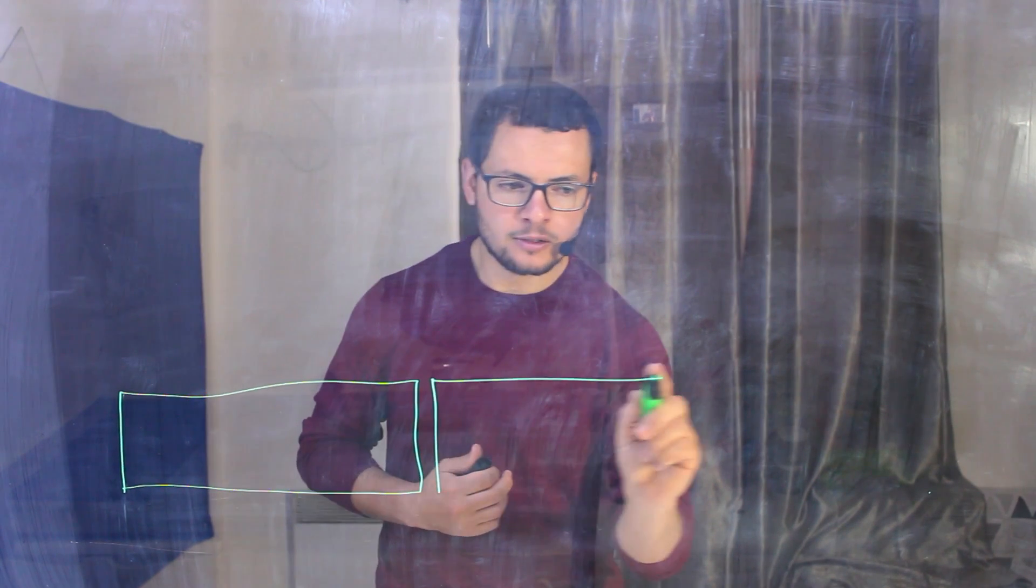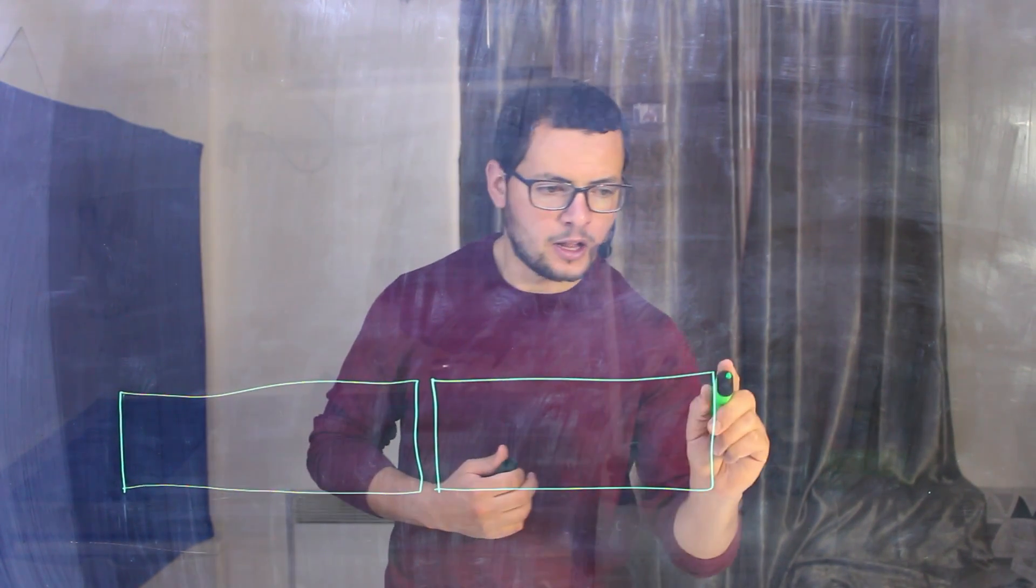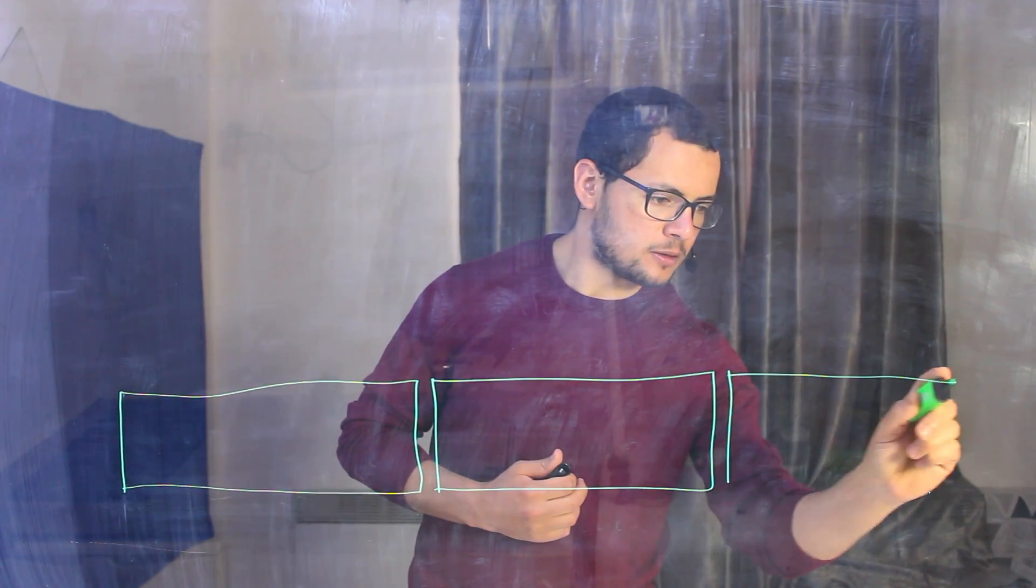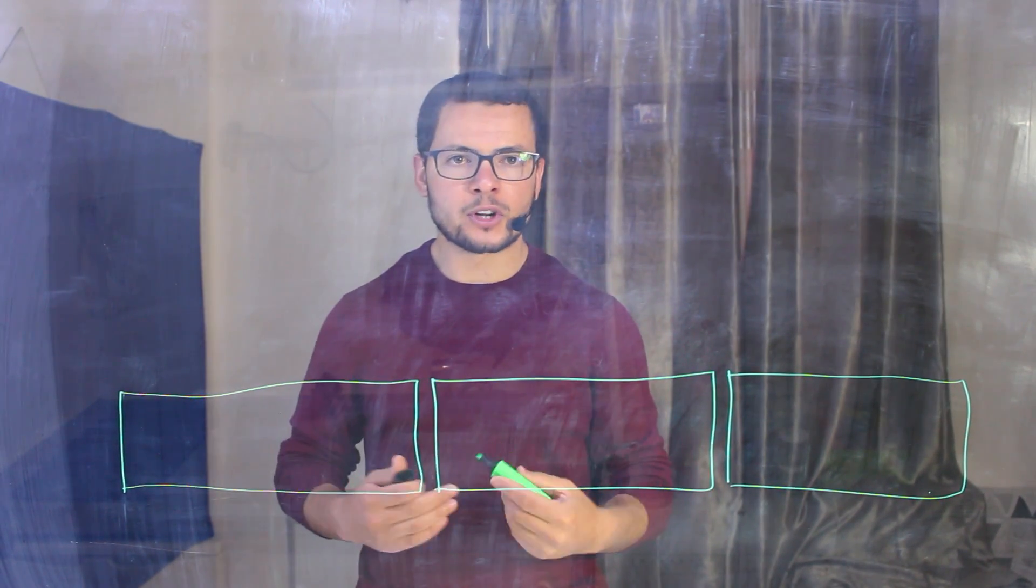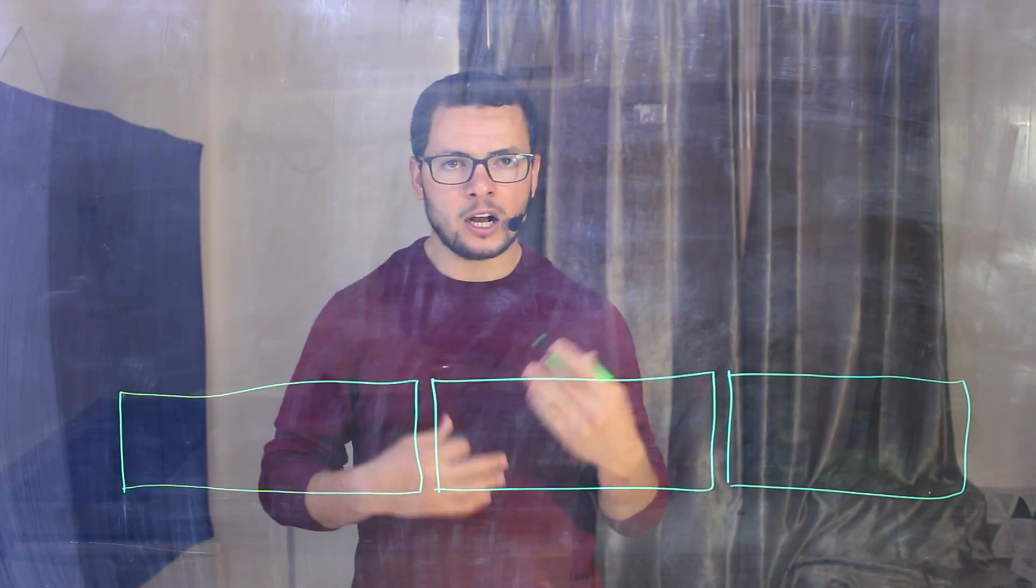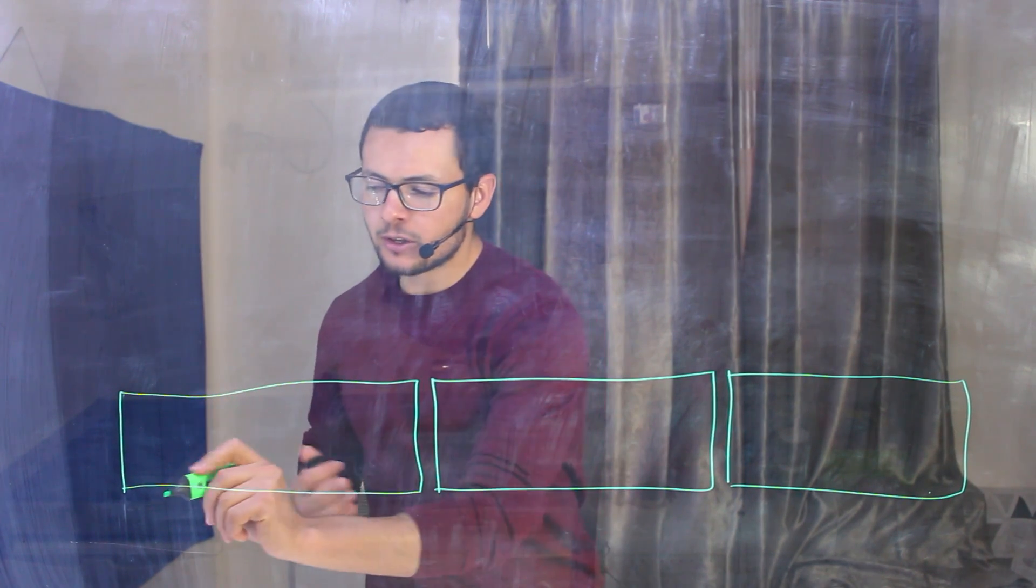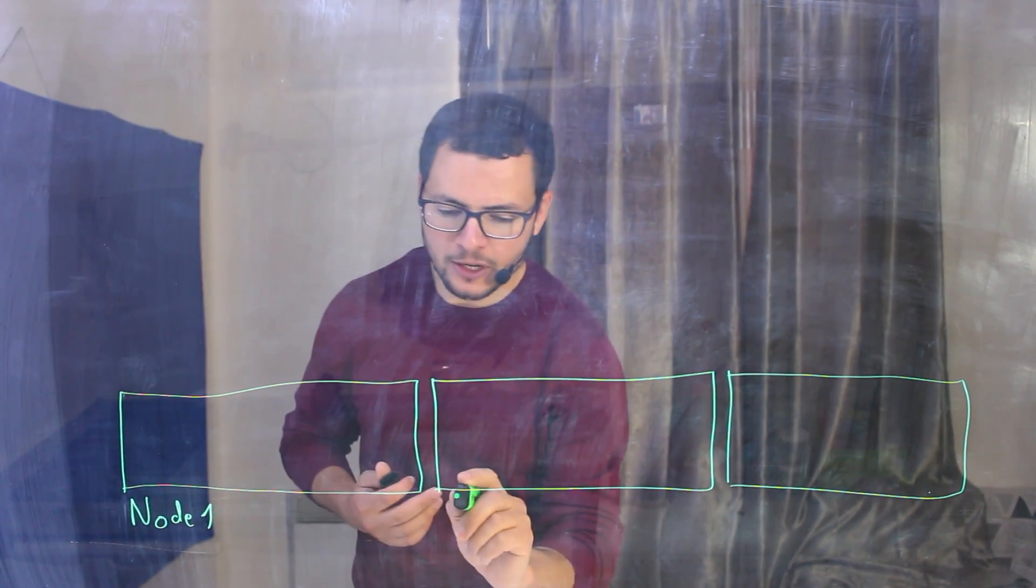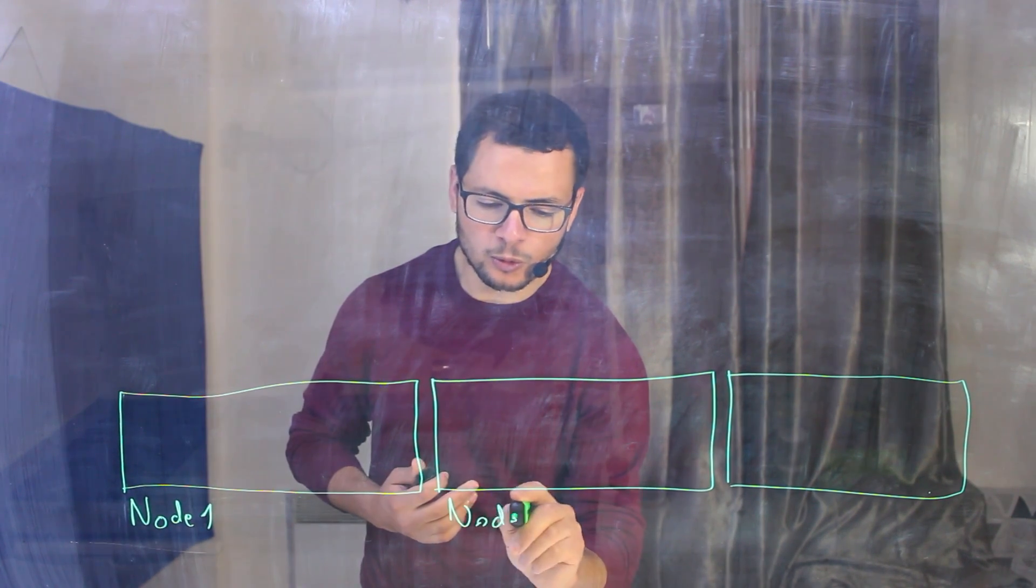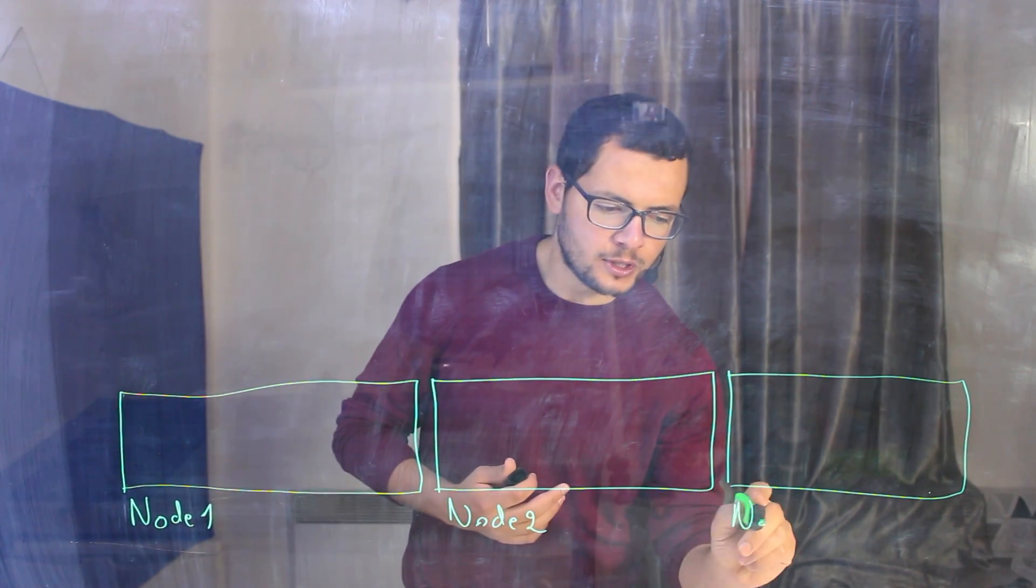So let's say we have here one virtual machine here. And we'll have another one. And a third one. And those virtual machines or physical clusters in the Kubernetes objects, they are called the nodes. So we'll have here node number one and node number two and node number three.